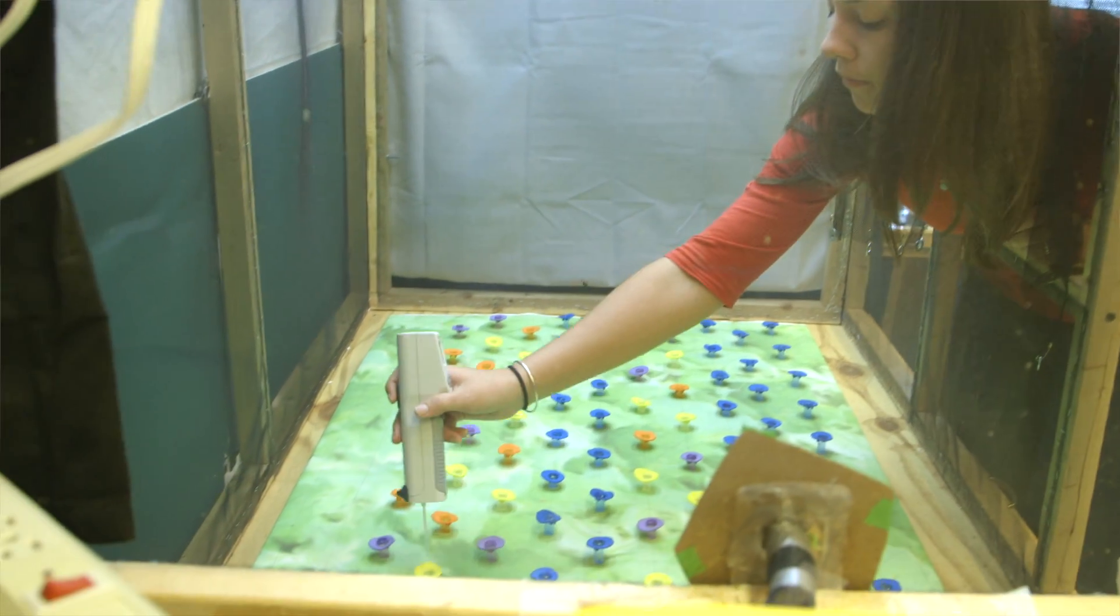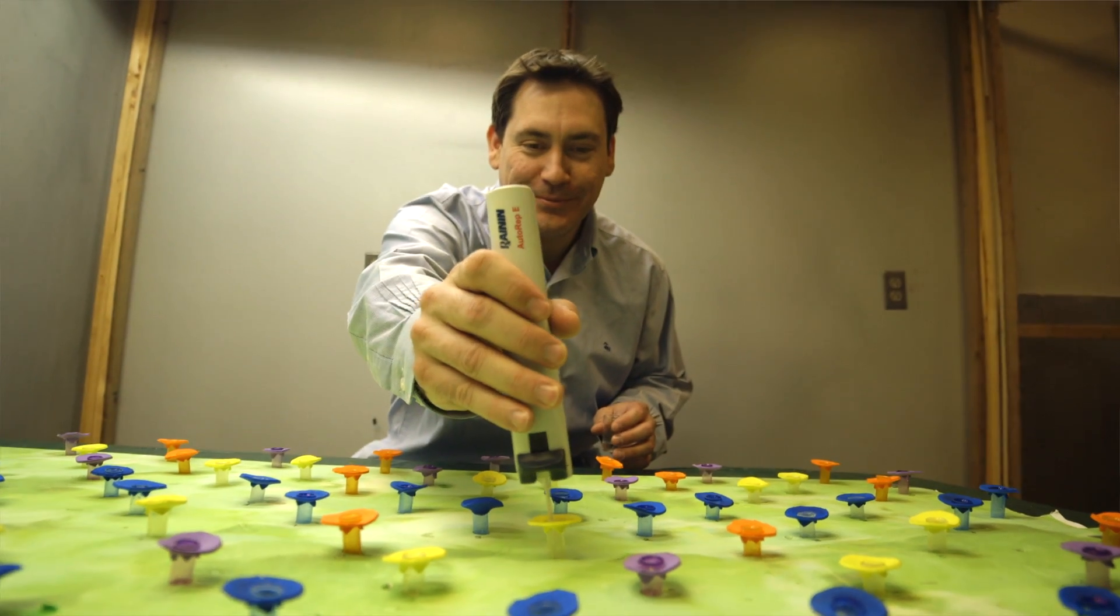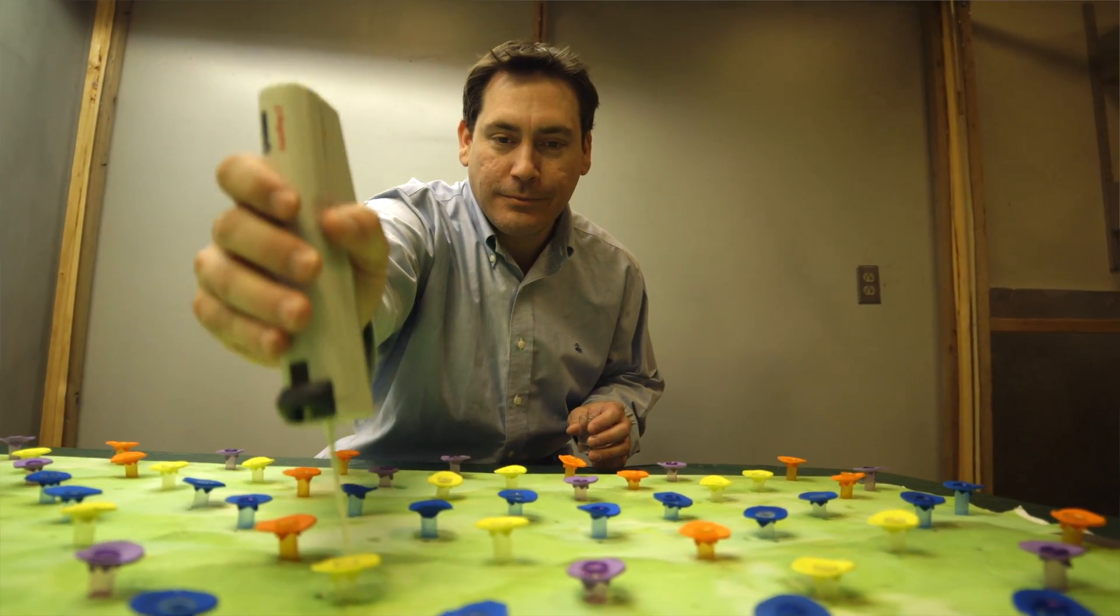We're studying mental flexibility by using what's called a task switching paradigm. Subjects are given two tasks and they're asked to perform each task randomly an equal number of times. They have a color discrimination task and an odor discrimination task.